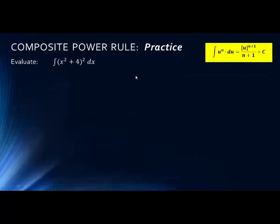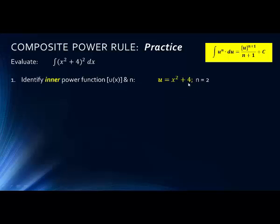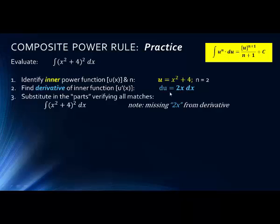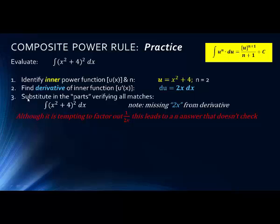Here we have (x² + 4) raised to the power of 2. We identify the inner function: u = x² + 4, n = 2. The derivative of the inner function is 2x dx. When we substitute in, we have a problem — we only have dx, we do not have the 2x. It would be nice to add 2x in and multiply by 1/(2x) to offset it like we did with the 20, but we don't have a mechanism for pulling a variable outside of an integral. So we cannot solve this integral using this substitution method.